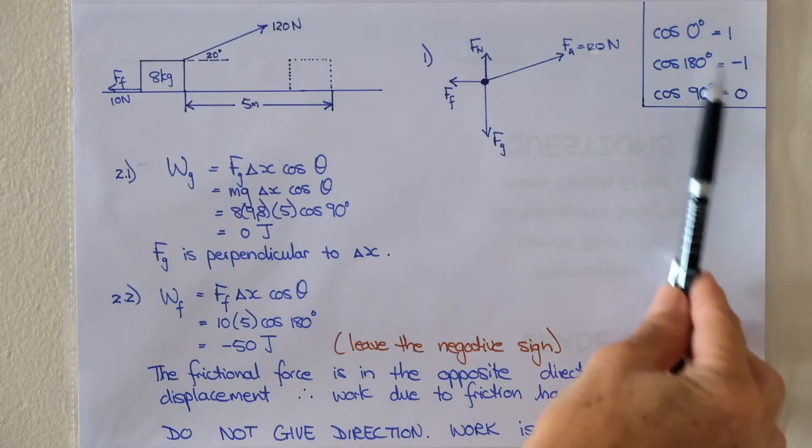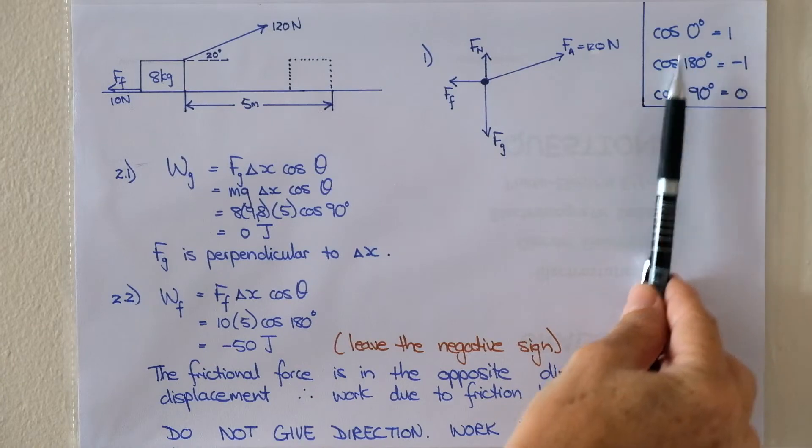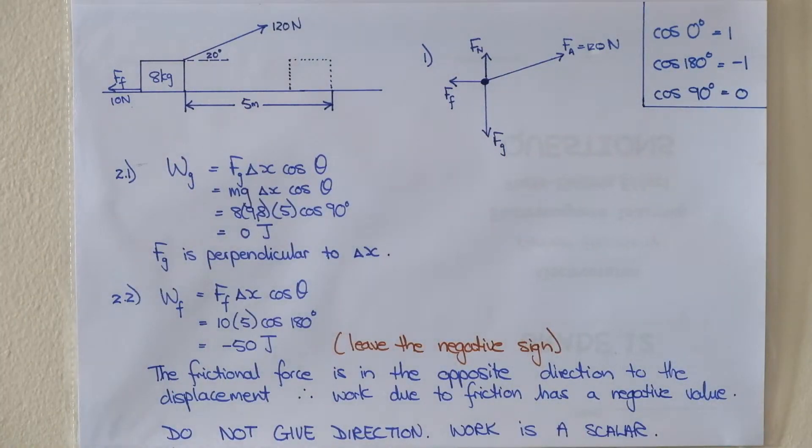Learn these cos values. Cos of 90 is zero. Cos of zero is one and cos of 180 is negative one. Write them down somewhere and try to remember them.